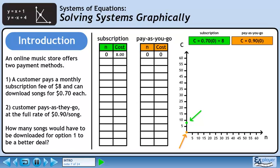A customer with a subscription pays $8 even if no songs are downloaded. In the pay-as-you-go plan, the user pays nothing if no songs are downloaded. On the graph, we'll use green points for the subscription option and orange points for the pay-as-you-go option.